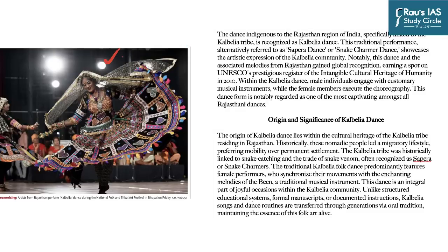The last article for today appeared on page one and deals with the Kalbelia dance form, native to Rajasthan — very important from the perspective of art and culture in prelims. The dance is indigenous to Rajasthan and specifically linked to the Kalbelia tribe, so it derives its name from the tribe. This traditional performance is alternatively referred to as 'Sapera dance' or 'snake charmer dance' and showcases the artistic expression of the Kalbelia community. The dance and associated melodies from Rajasthan earned a spot on UNESCO's prestigious register of Intangible Cultural Heritage of Humanity in 2010.